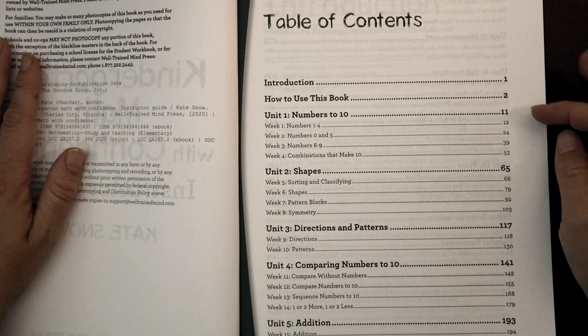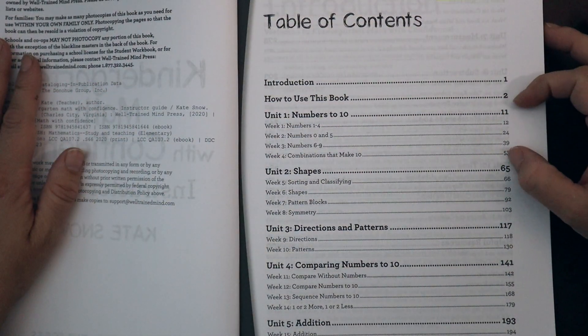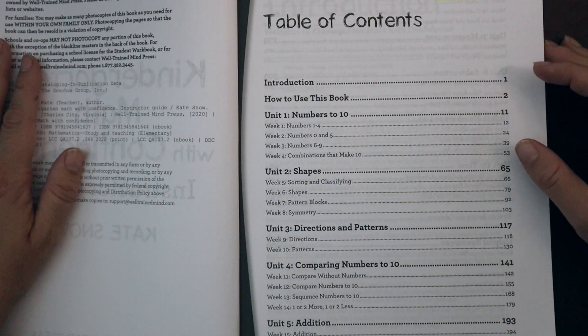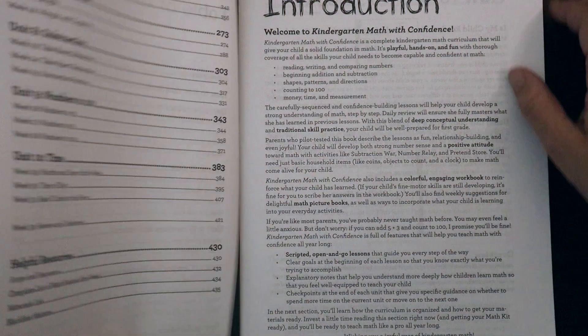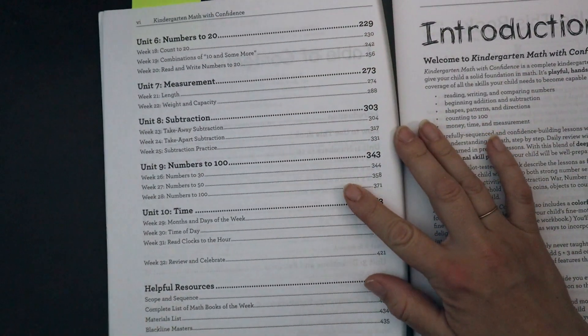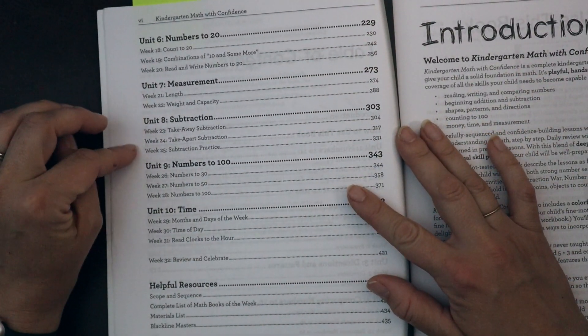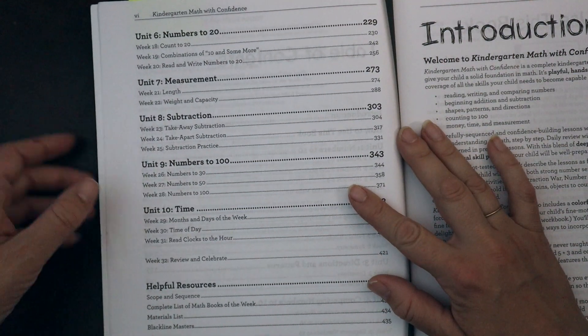These are the different topics you will learn in kindergarten math. We go through how to use this book, and then the book is divided into these different units. It has numbers to 10, shapes, directions, and patterns, comparing numbers to 10, addition, numbers to 20, measurement, subtraction, numbers to 100, and time.